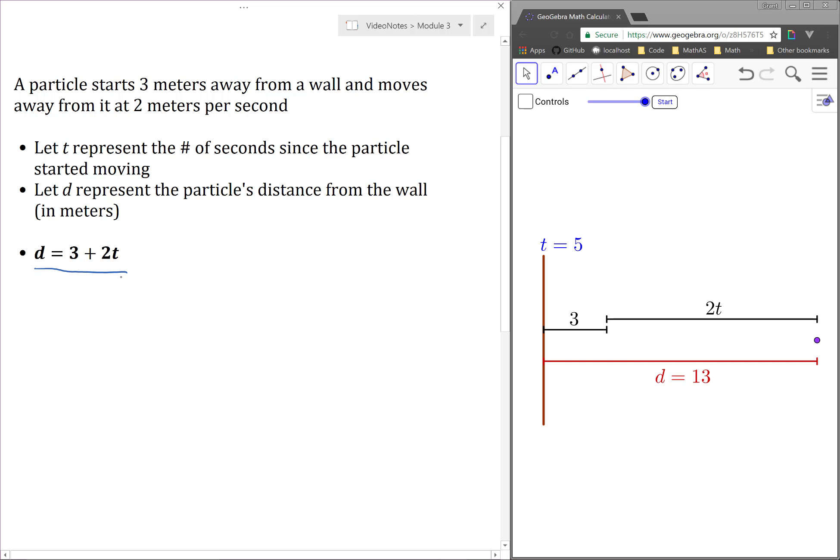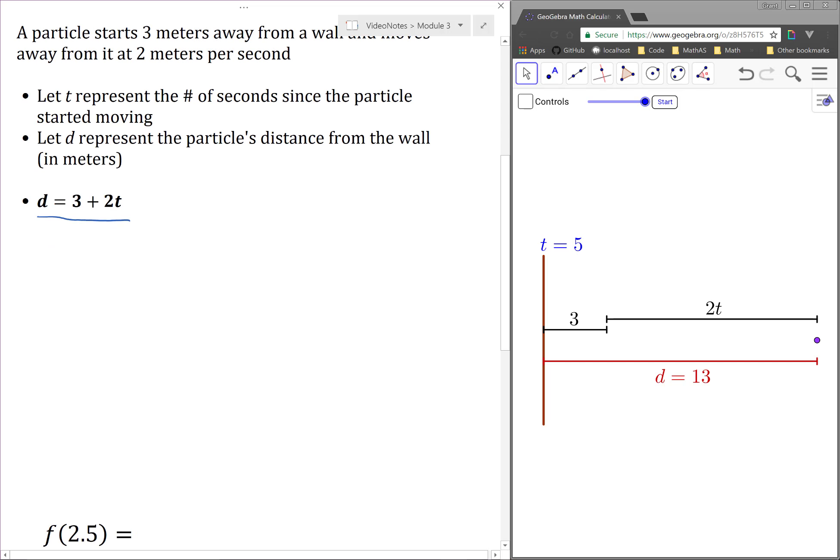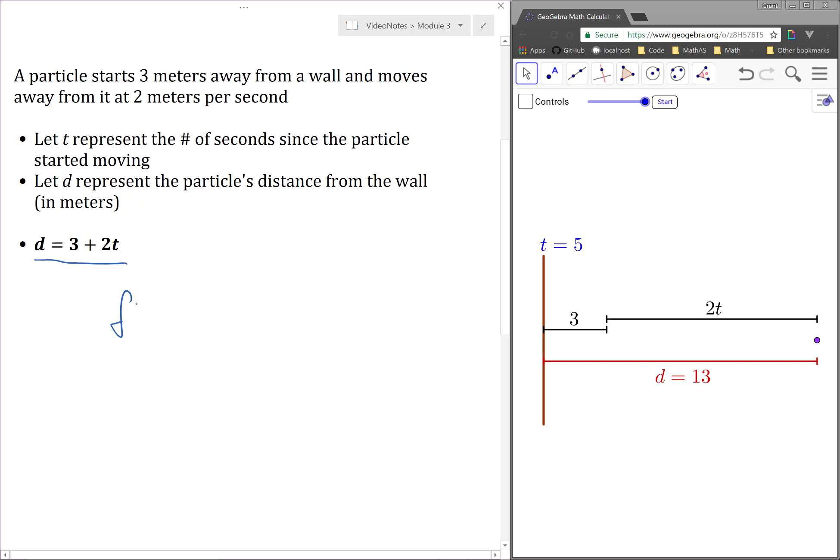We know that d is a function of t, and we can actually call this function f. So, f of t is equal to d. We actually have a function formula for this, so f of t is equal to 3 plus 2t.